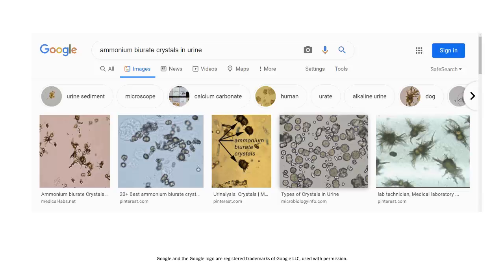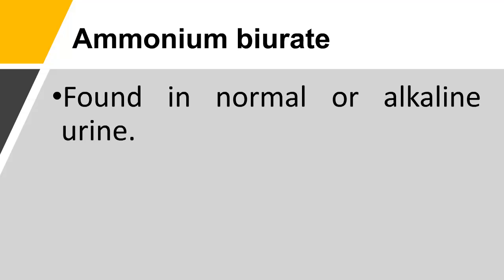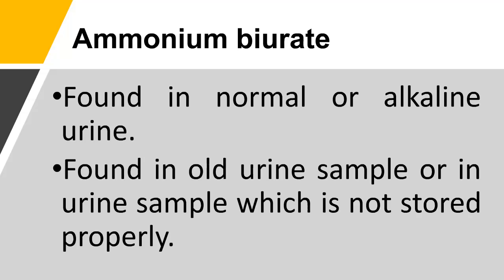Ammonium biurate crystals in urine are found in normal or alkaline urine. They are also found in old urine samples or in urine samples that are not stored properly.